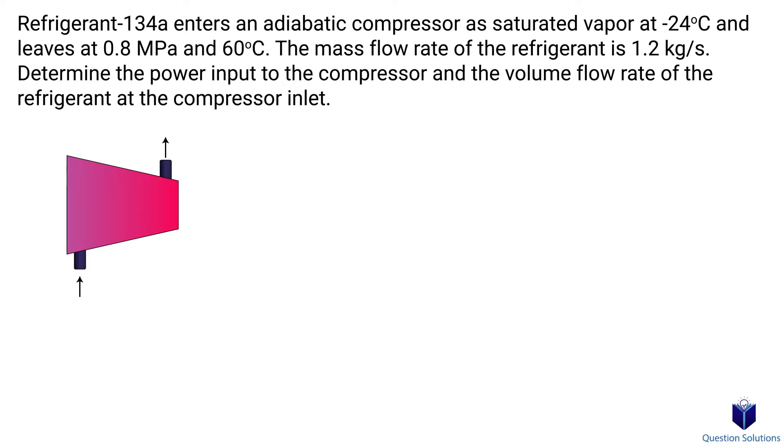In this question, we have refrigerant 134a entering a compressor and we need to figure out the power input to the compressor and the volume flow rate of the refrigerant at the compressor inlet. Let's write down what we know. The initial temperature is negative 24 degrees celsius. Final temperature is 60 degrees celsius. We don't know initial pressure, but we know the final pressure, which is 0.8 mega pascals. The mass flow rate is 1.2 kilograms per second.